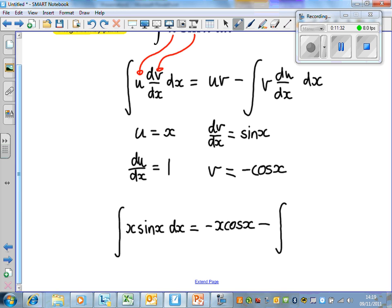So take away the integral of, and it's v multiplied by du/dx. So it's minus cos x multiplied by du/dx. This is what's made it so simple. du/dx is 1, 1 times minus cos x, which is going to be minus cos x.